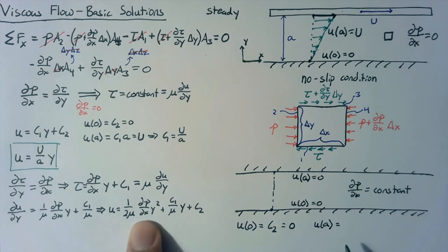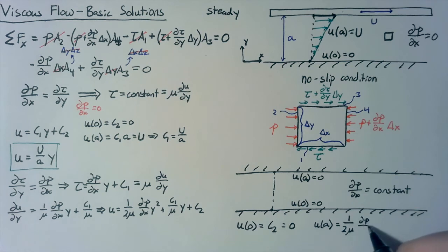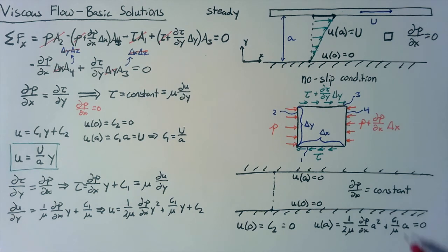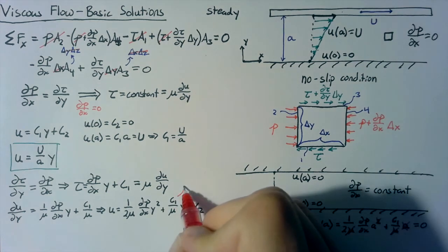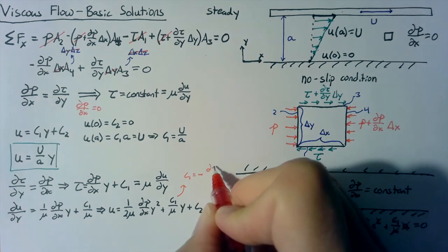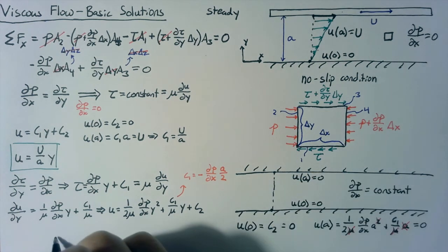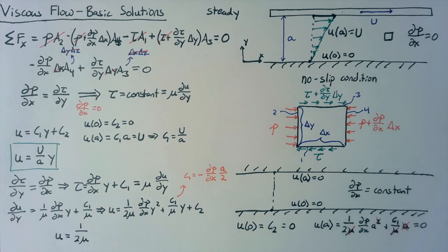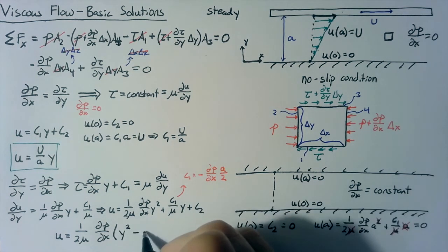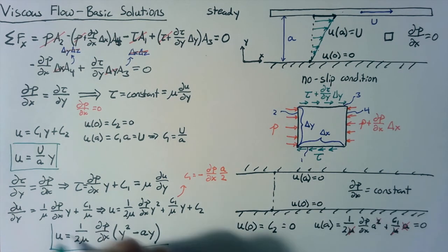U of a means that we actually need to plug in a's to both of these y values. So we end up with 1 over 2 mu dpdx times a squared plus this unknown c1 over mu times a. And once again, this is equal to zero. So to solve for c1, we divide through by a, we divide through by this mu, and we end up with c1 is equal to a negative dpdx multiplied by a divided by 2. So writing out the full solution, we end up with u is equal to 1 over 2 mu dpdx multiplied by this y squared here minus a times y. And this is the final solution for our second case.